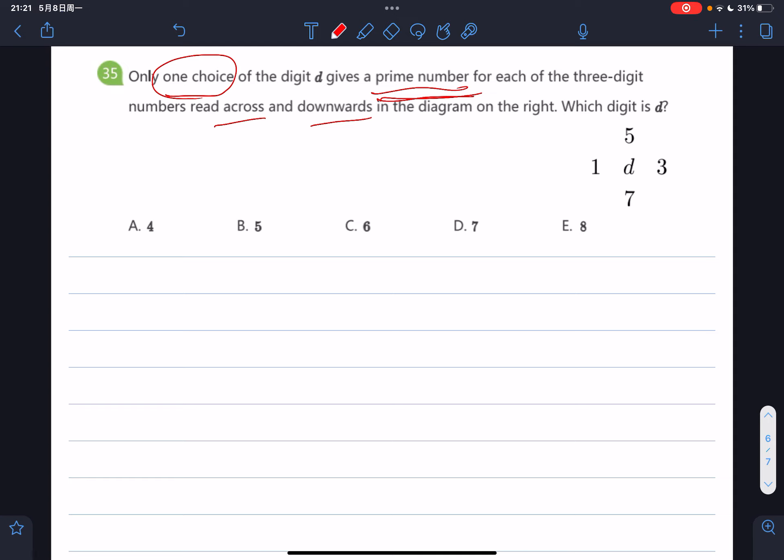The first one is A, it is 4. So 143. However, it's very easy for us to find 143 can be expressed as 11 times 13. So this one is wrong because it should be a prime number, however 143 is not a prime number.